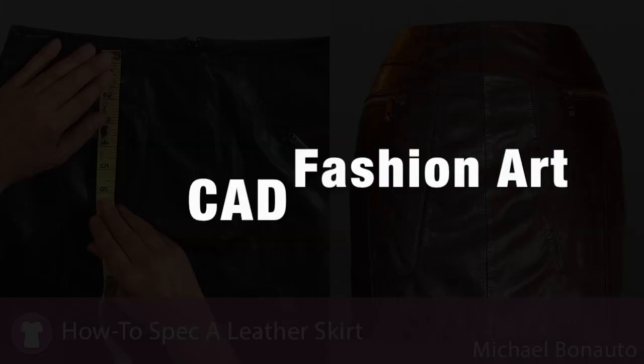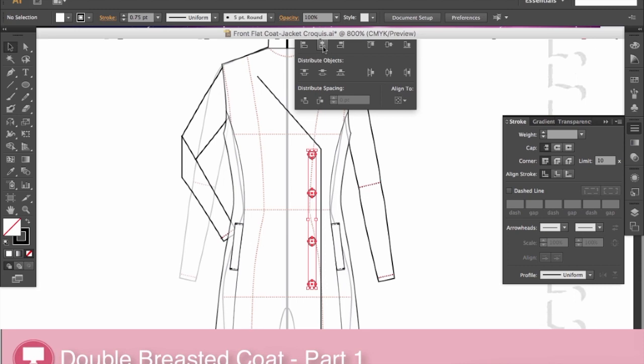In the first part of this lesson, we will draw the double-breasted coat and look at details on it, such as the buttons, buttonholes, and the lapel. We will also render a fur collar.